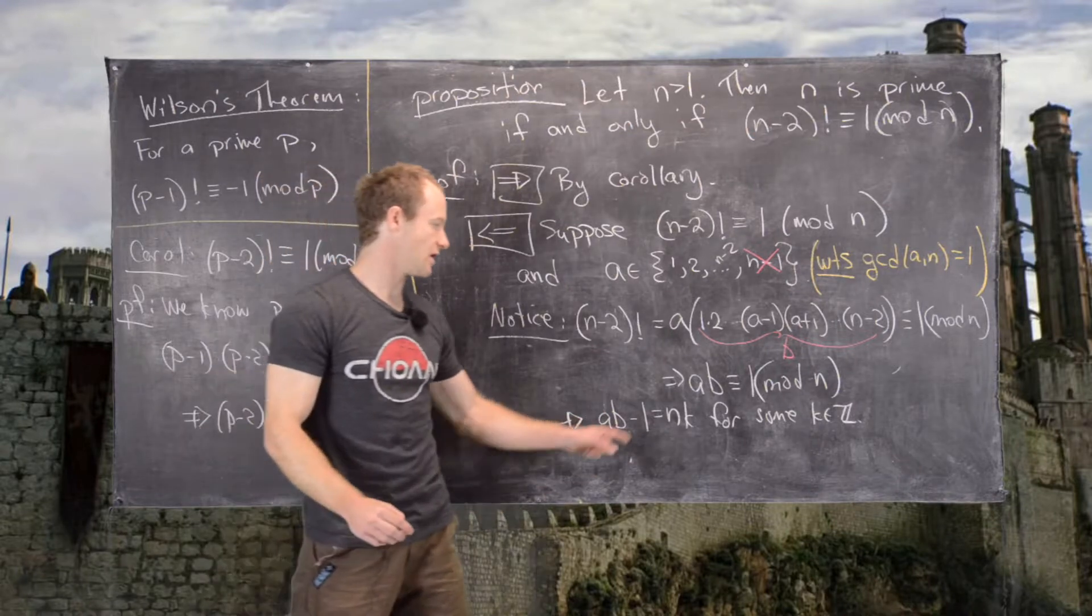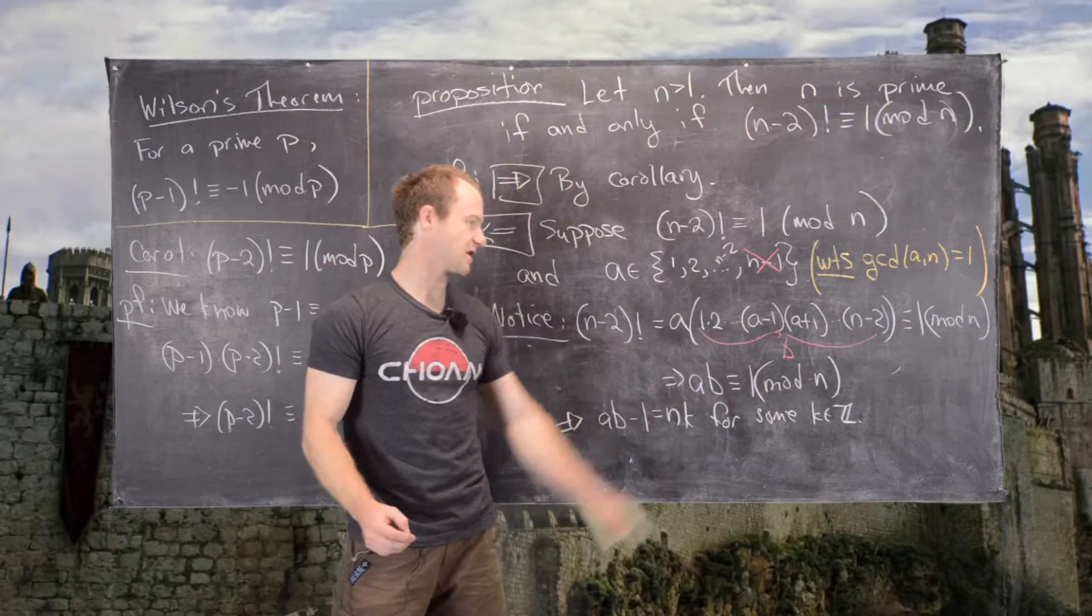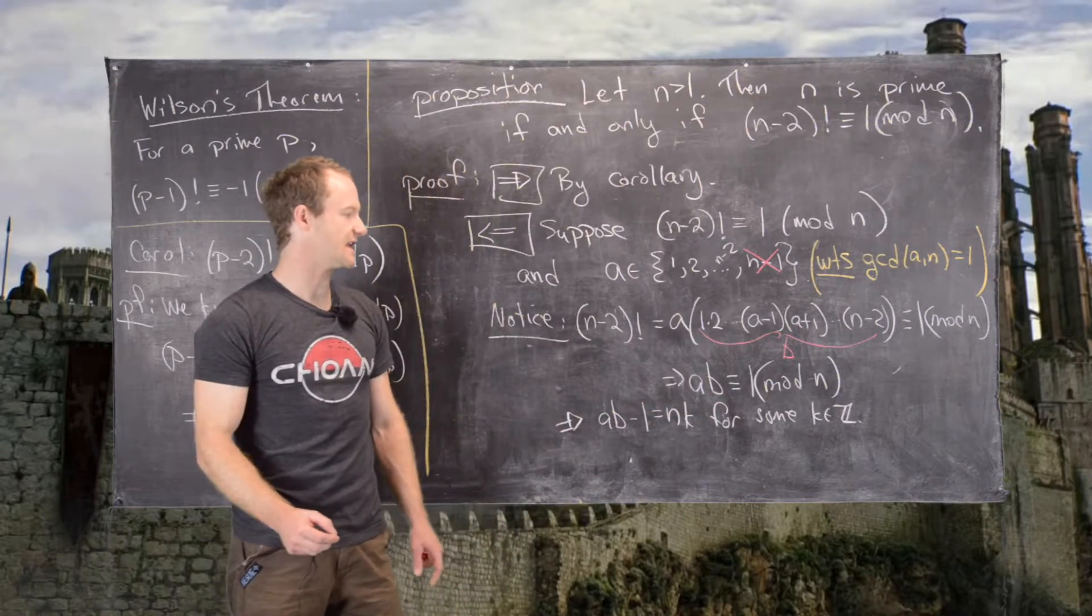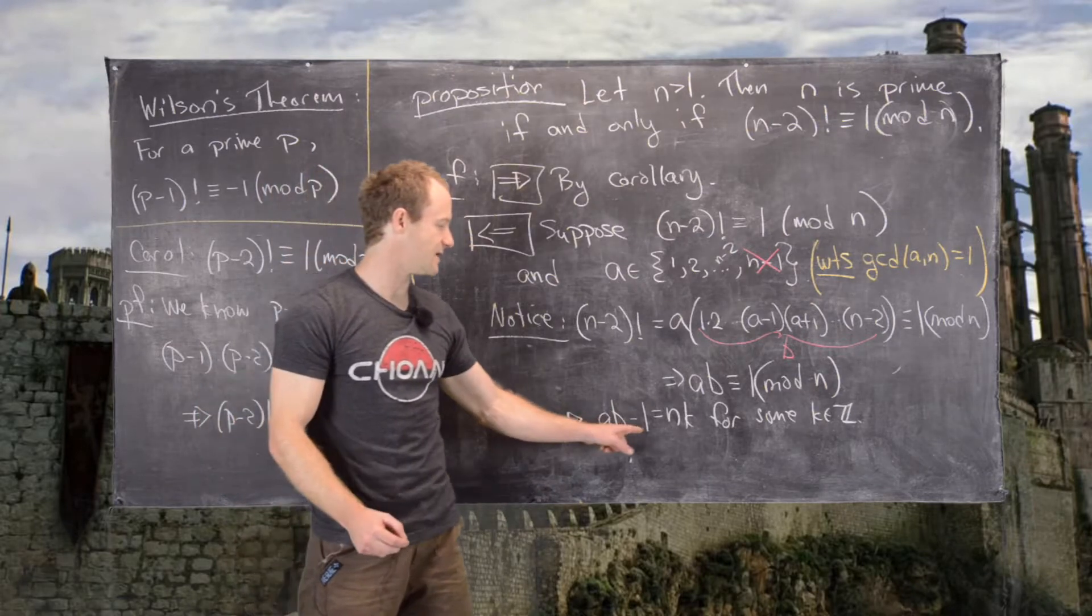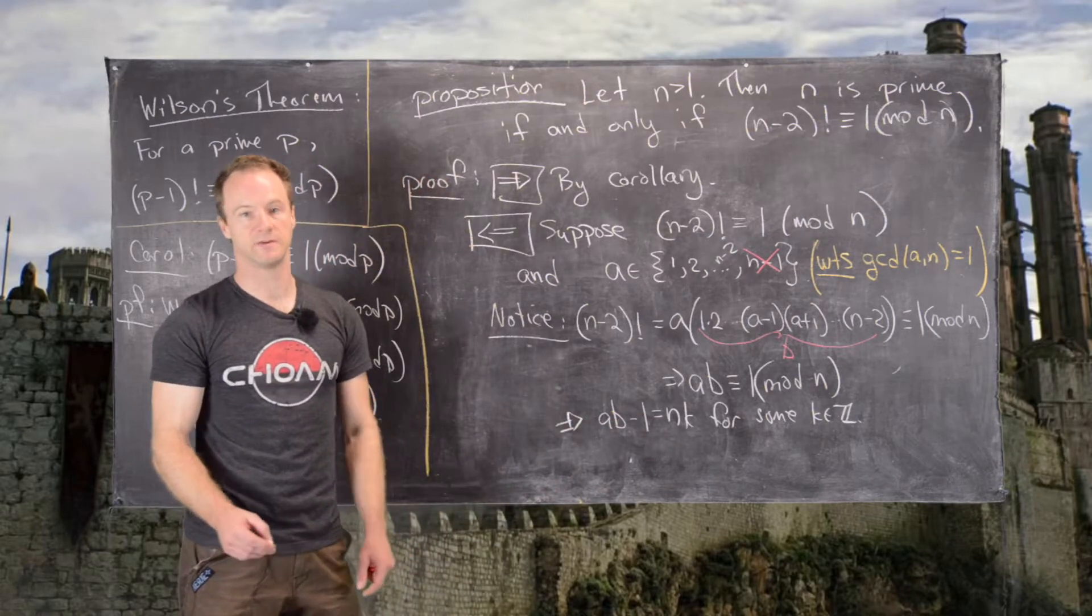Let's recall that if ab is congruent to 1 mod n, it means that n divides ab - 1. But that means ab - 1 is a multiple of n.